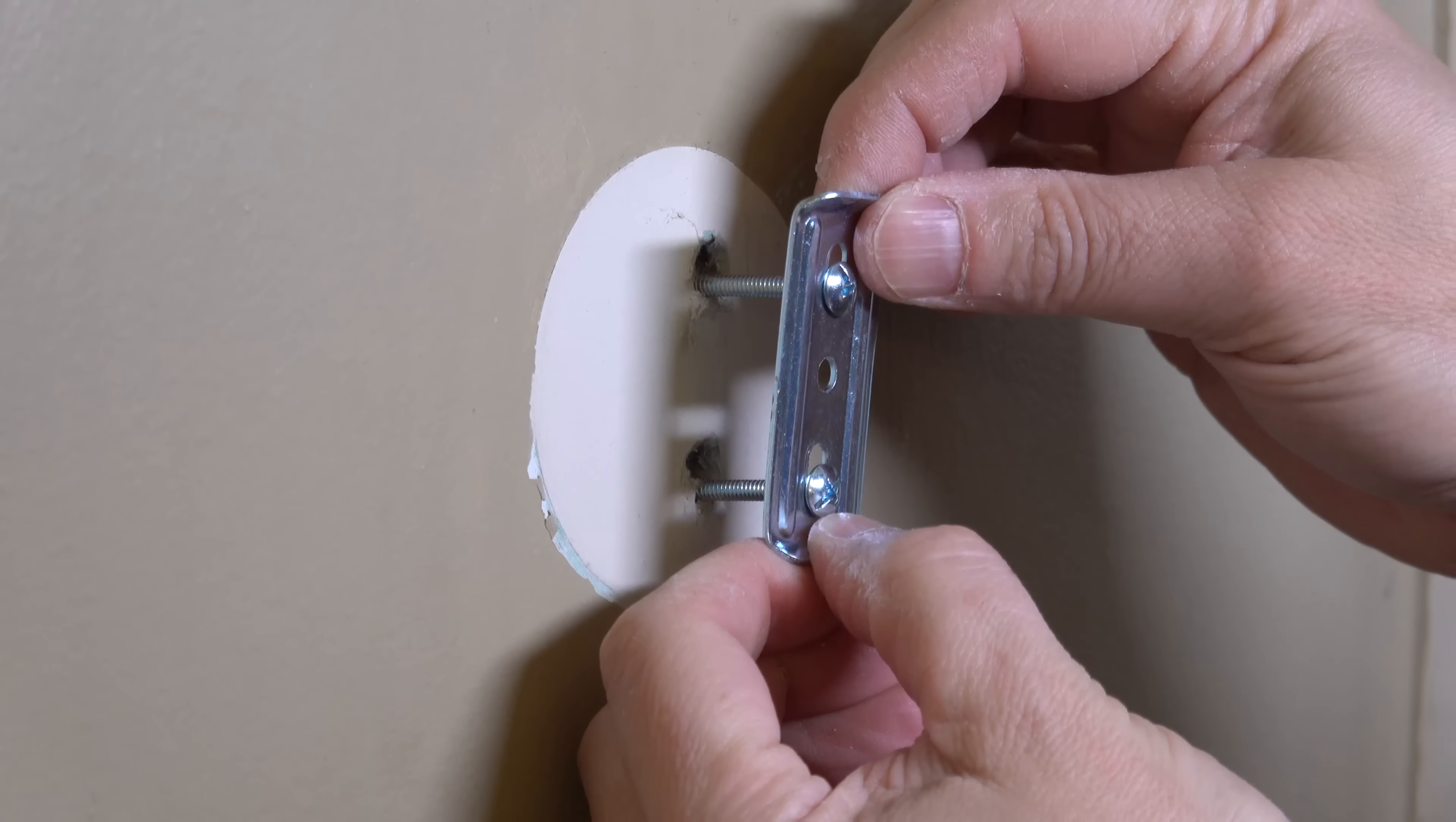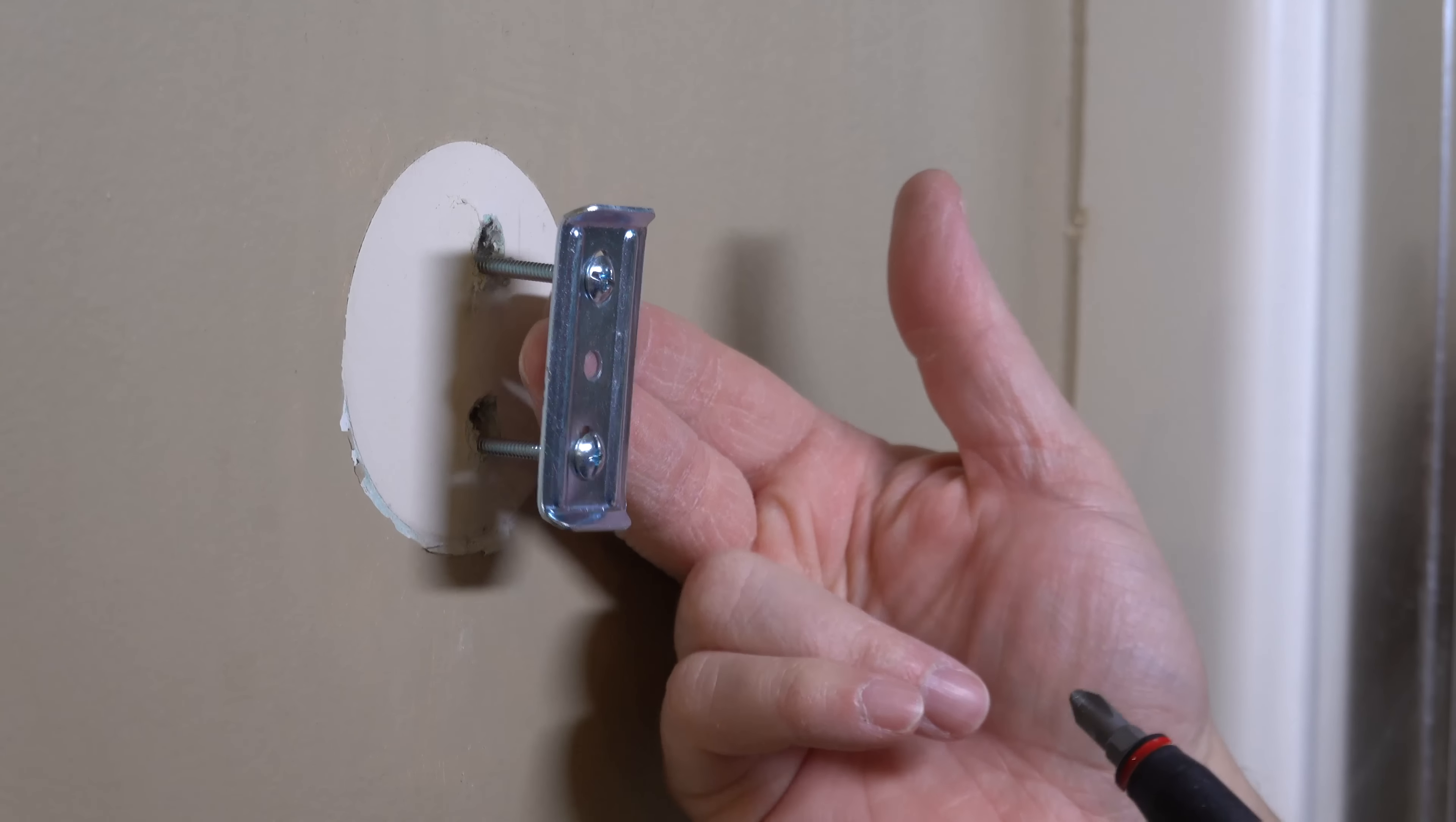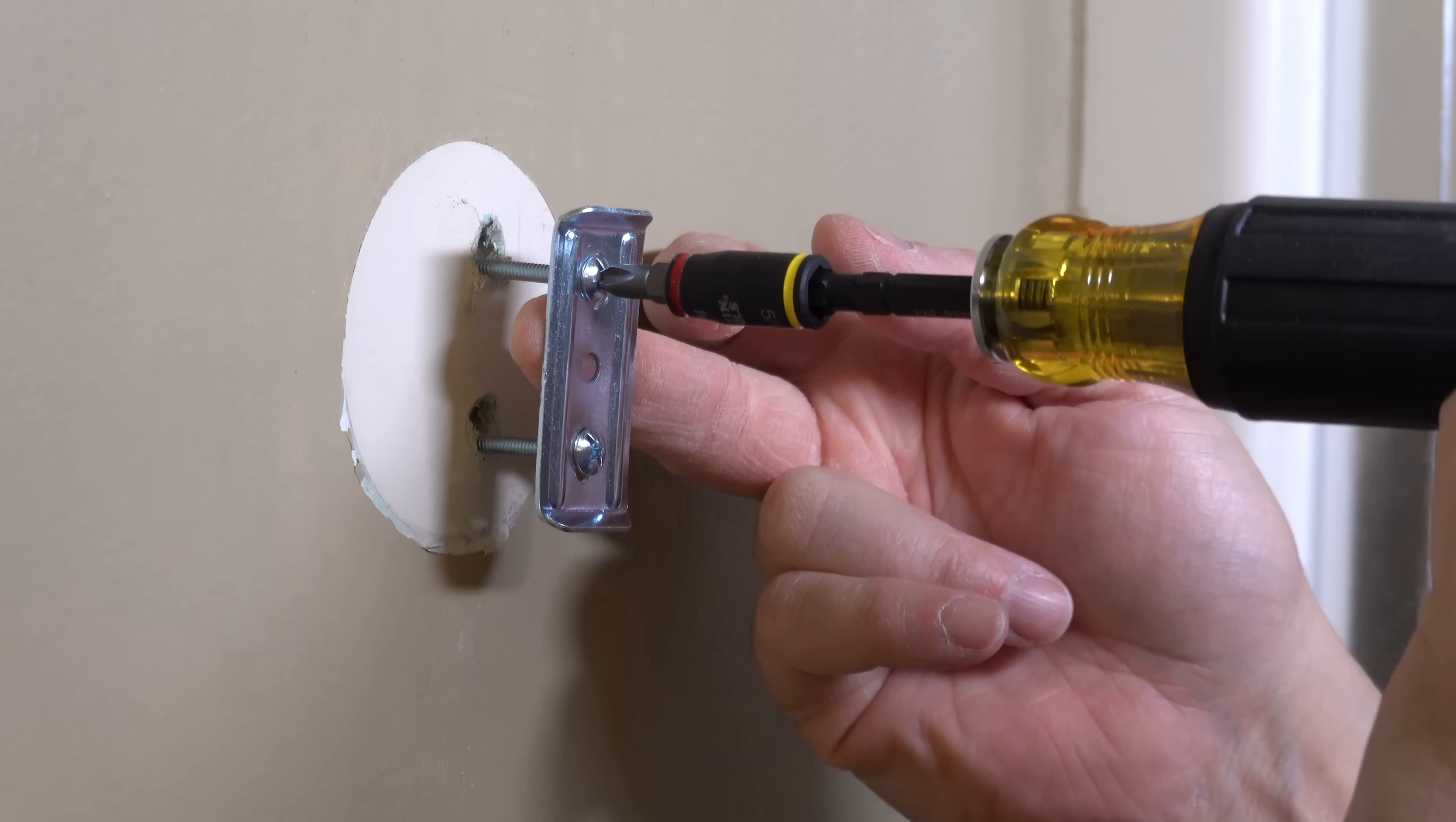And now we've just got to tighten those screws down but there's a catch you want to be aware of. If you use a cordless screw gun those wings are going to spin around inside the wall. So you want to put your fingers behind the bracket and hold onto it to create some resistance. That's going to make those wings press against the wall board and now you can easily tighten these screws down.